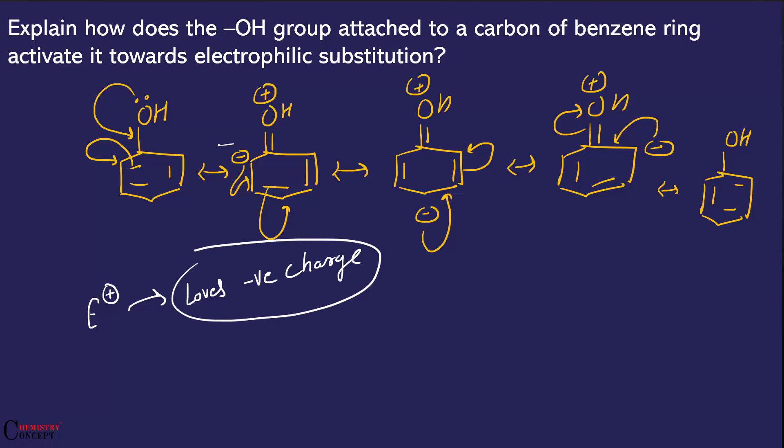Ab agar aap dhyan se dekho, to is resonance ki wajah se, is wale mein you can see benzene par ek negative charge hai. Is wale mein bhi you can see benzene par ek negative charge hai. Aur is wale mein bhi you can see benzene par negative charge hai. To actual jo benzene ki structure hai, wo teeno ka overlap hota hai.